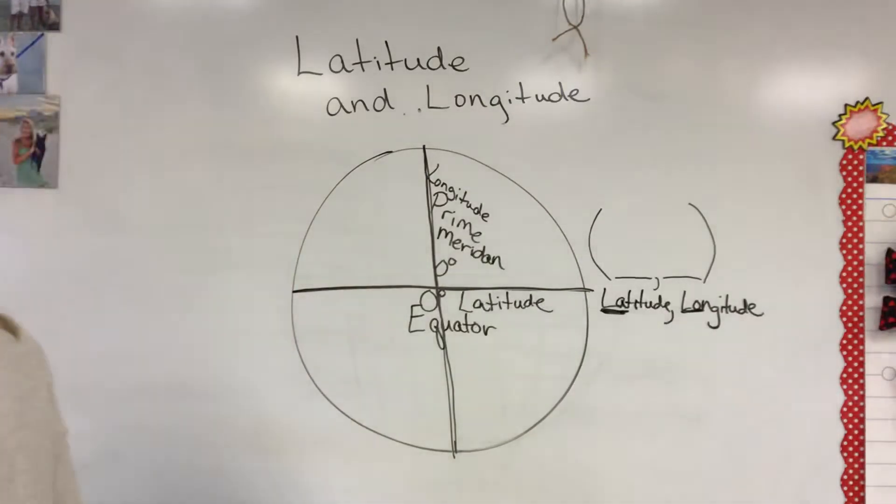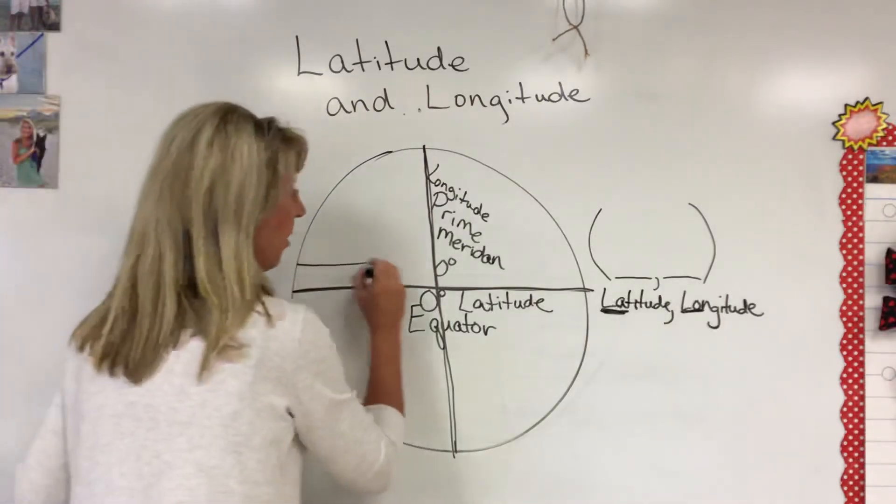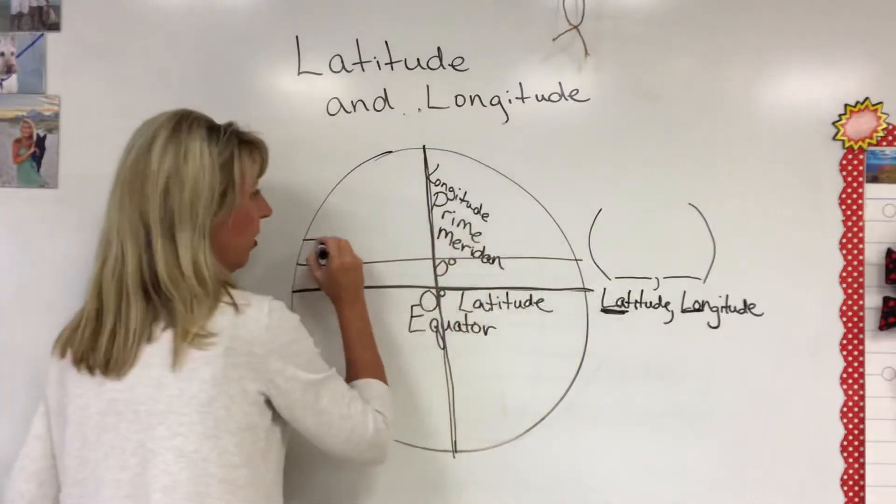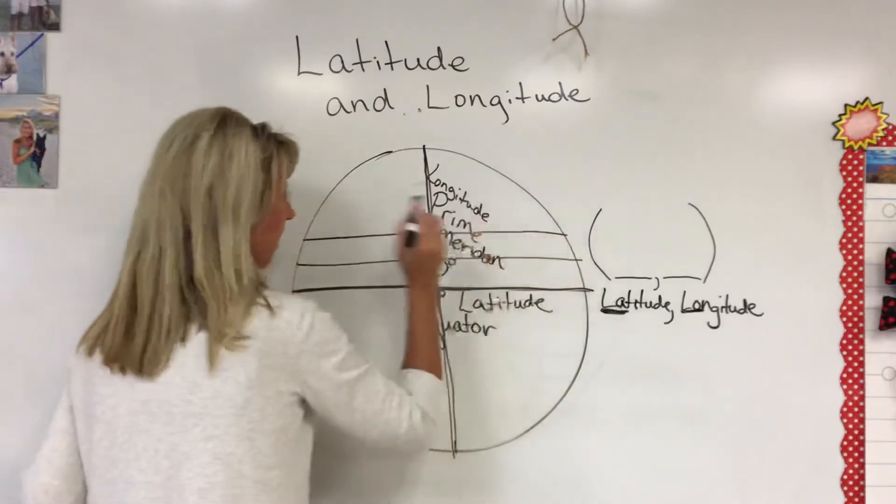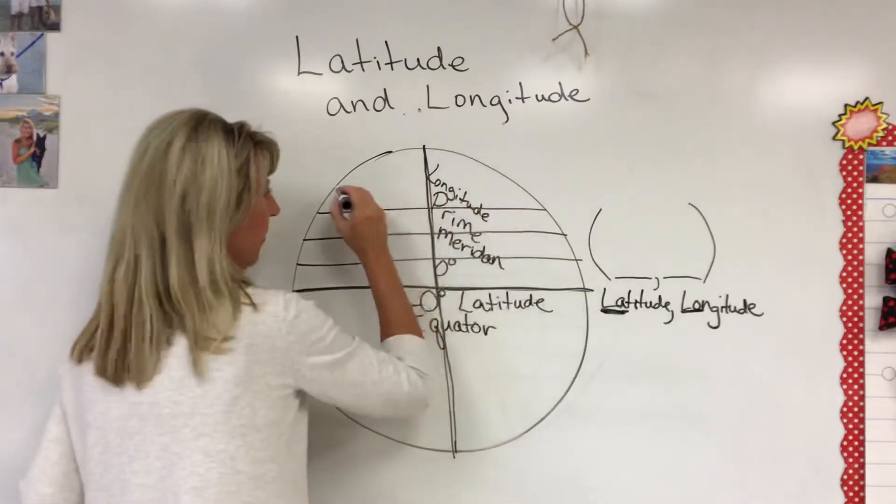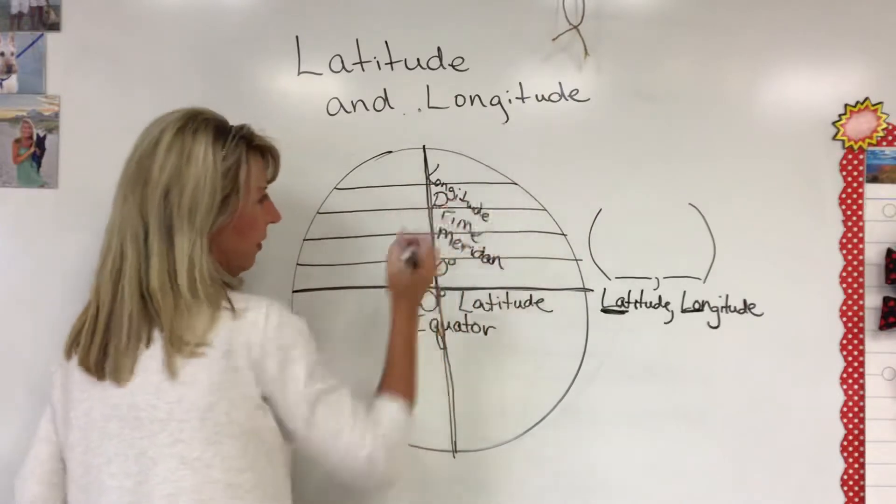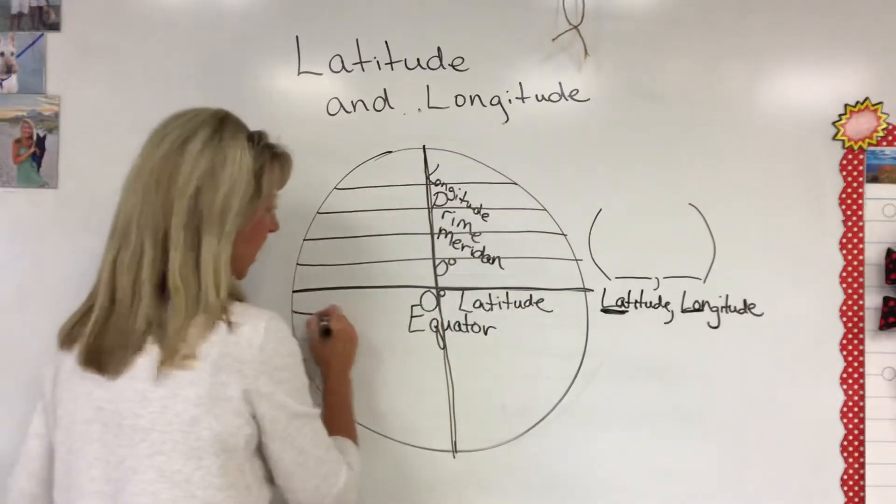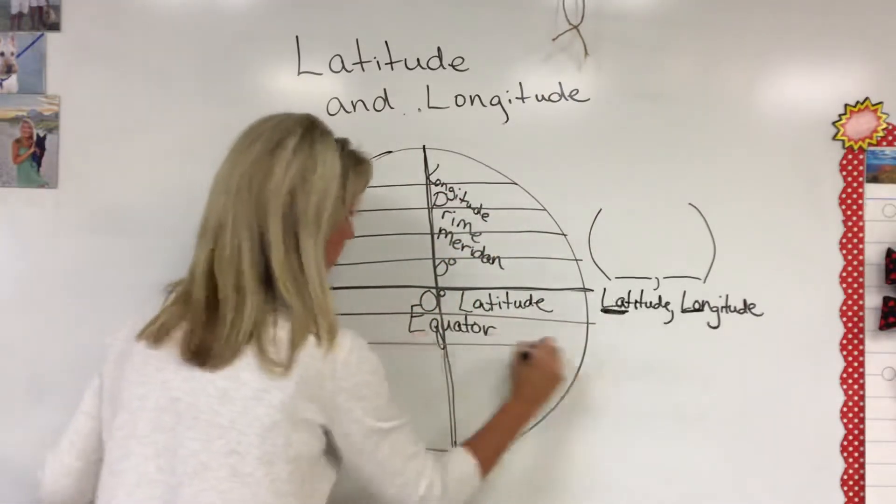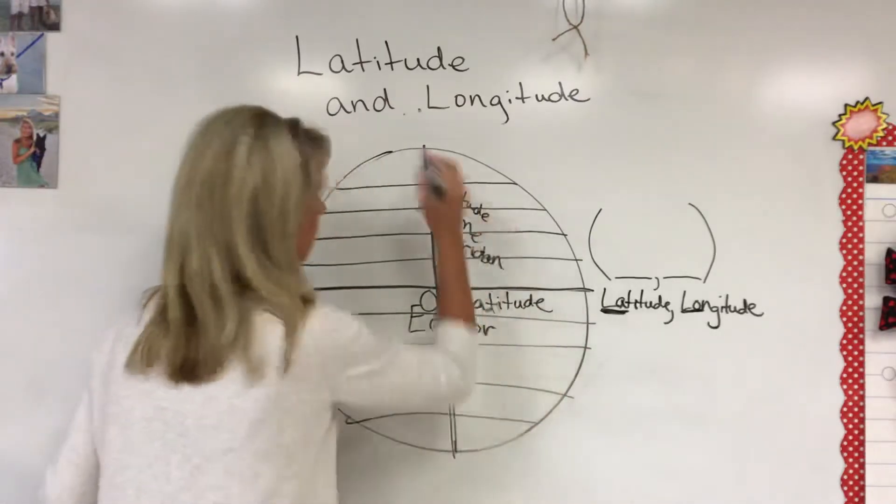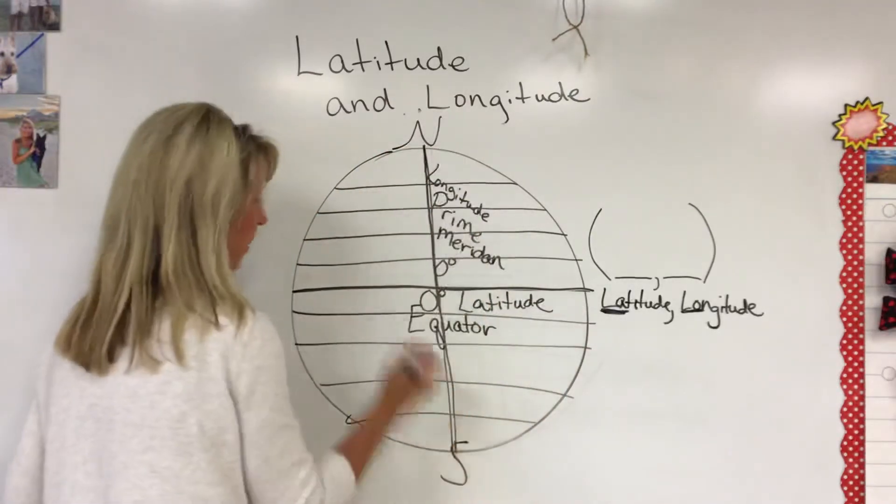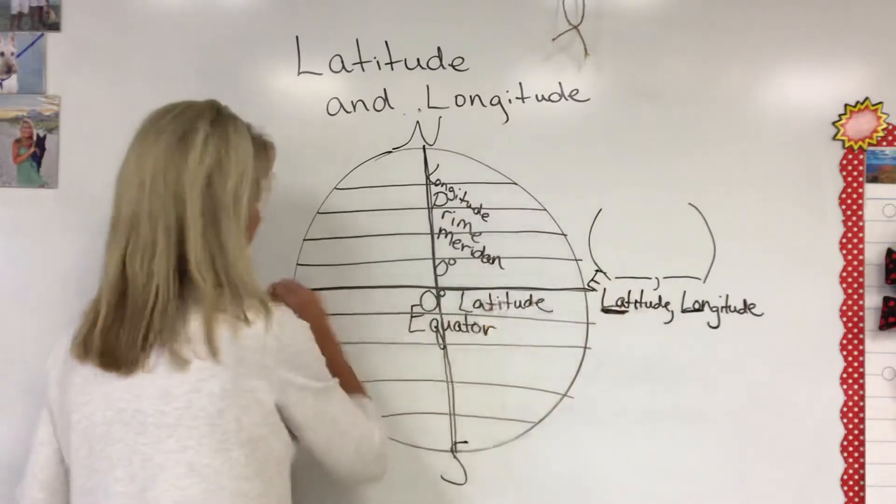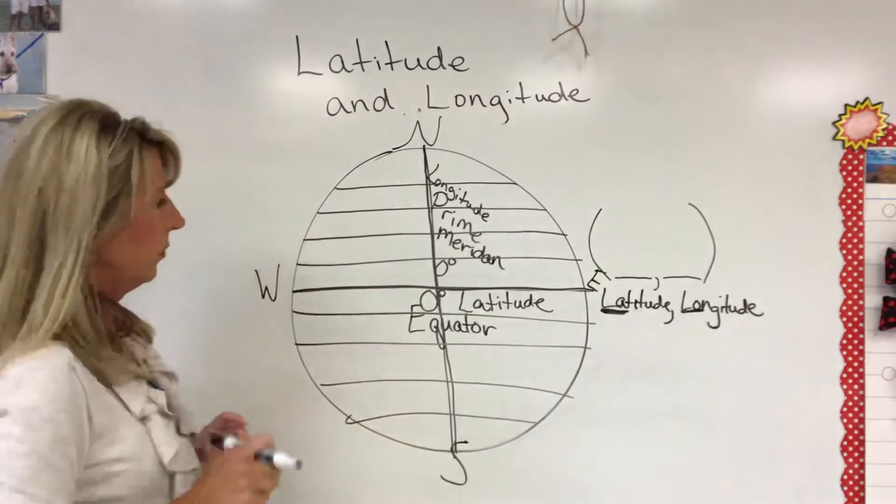In your book it shows a globe, it shows a world map, shows all these different numbers and all the lines that are parallel. Parallel are lines that run side by side but they never ever touch.